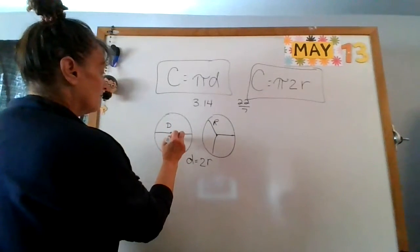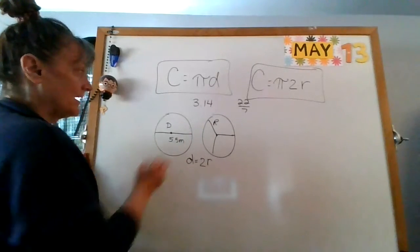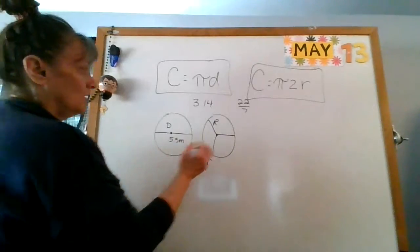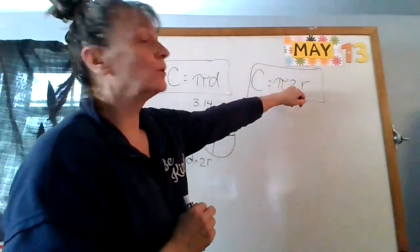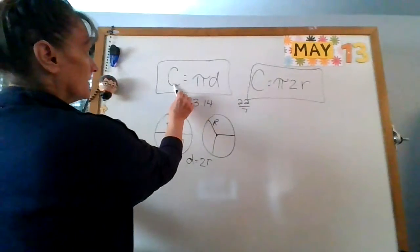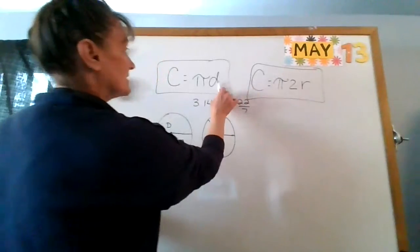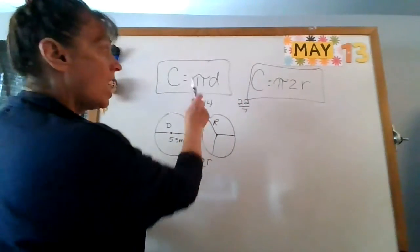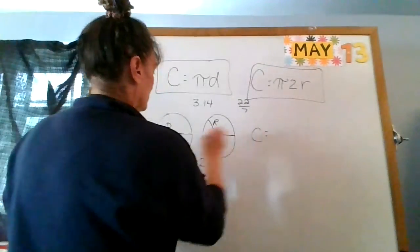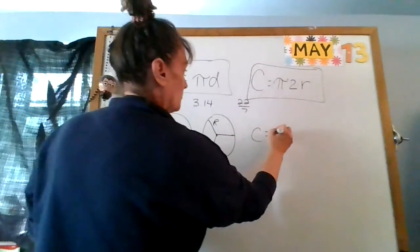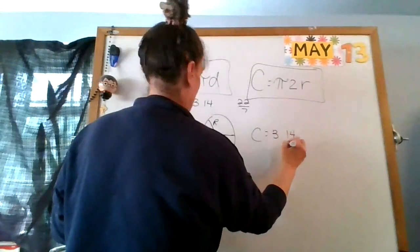So let's say they give me 5.5 meters for this and they say find the perimeter, find the length around. I'm going to ask myself diameter or radius. I want both of those on your paper, so I'm going to look at both.